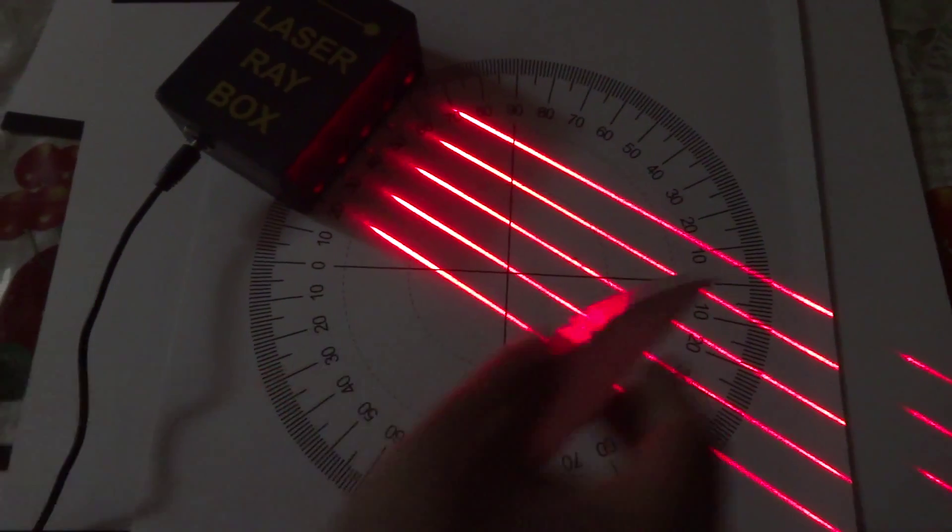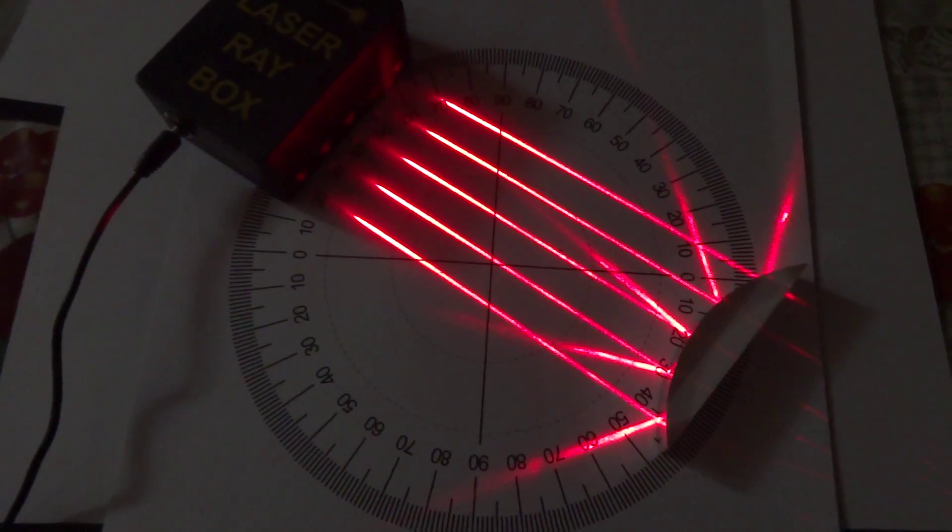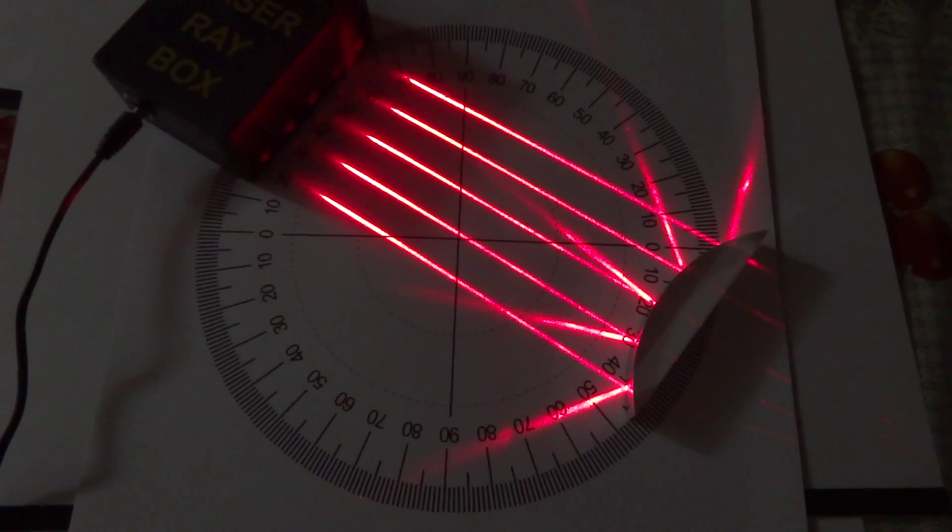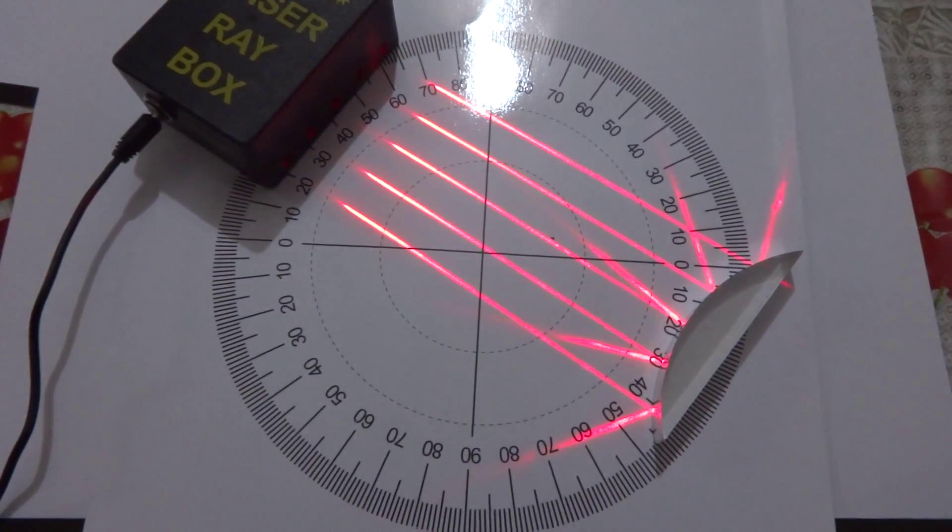This convex surface is diverging all the rays. In convex mirrors, you cannot see the real images.